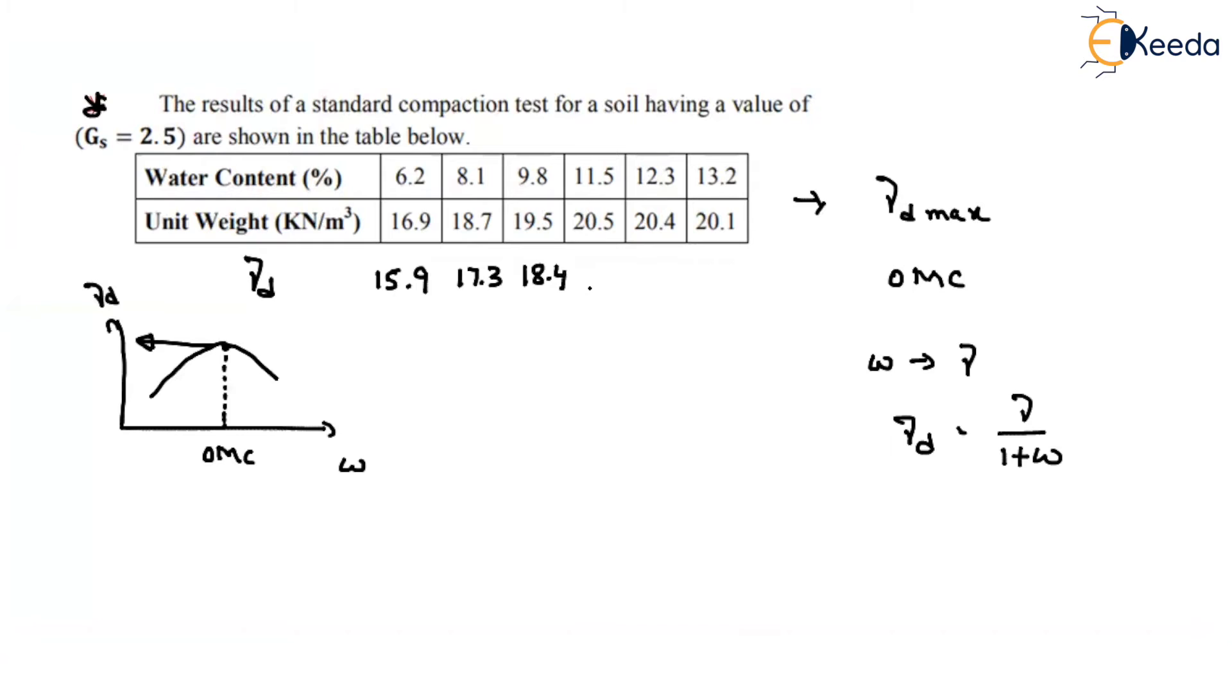And for water content 11.5, you are getting 18.4. For 12.3, you are getting around 18.2. For 13.2, you will get around 17.6. Now if you observe these values, dry density is increasing, increased, and increased. But after reaching 18.4, it started decreasing.